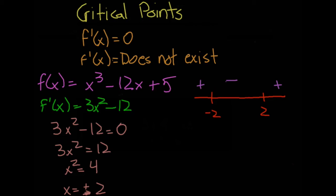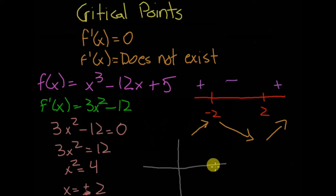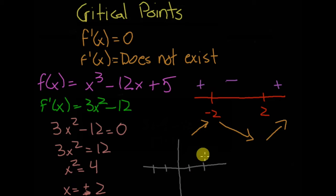Since you have positive, then negative, then positive, I'll draw arrows to indicate how the graph looks. Going from positive to negative means there's a maximum, and going from negative to positive means there's a minimum.